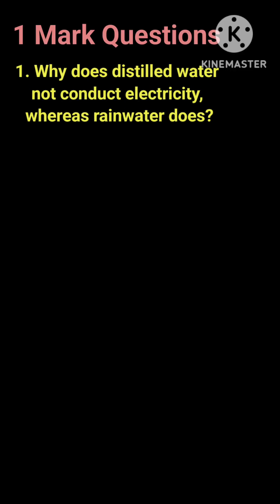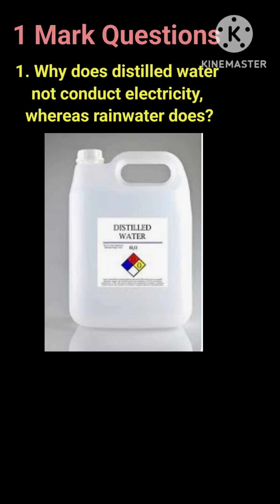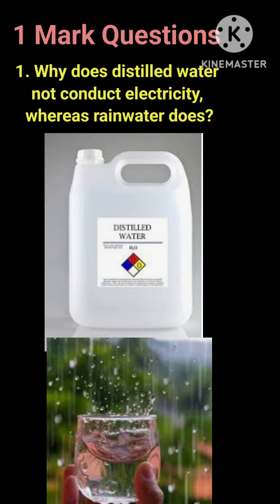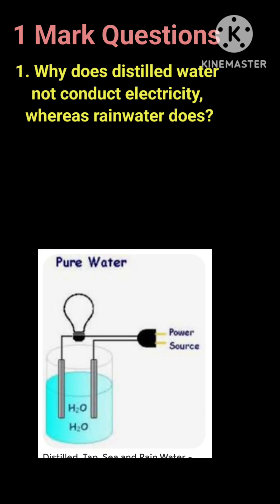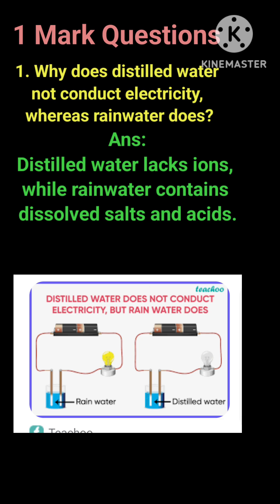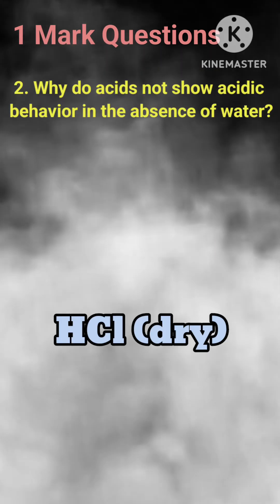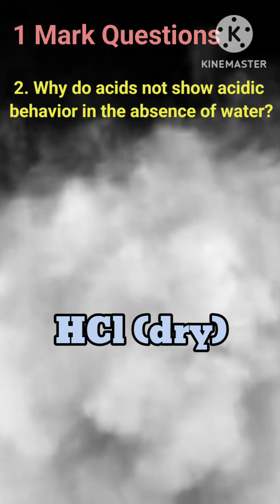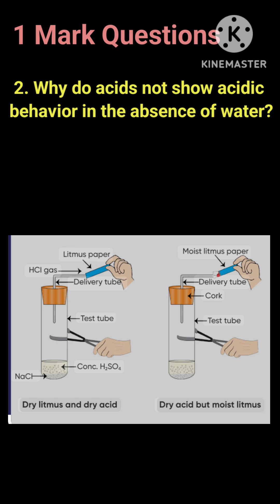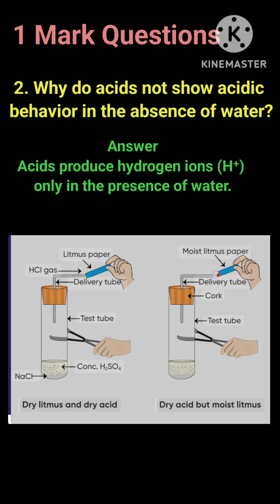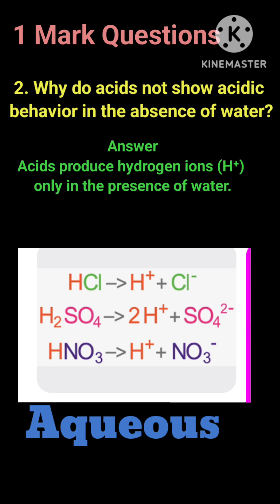One-mark questions. Question 1: Why does distilled water not conduct electricity whereas rainwater does? Answer: Distilled water lacks ions, while rainwater contains dissolved salts and acids. Question 2: Why do acids not show acidic behavior in the absence of water? Answer: Acids produce hydrogen ions (H⁺) only in the presence of water.